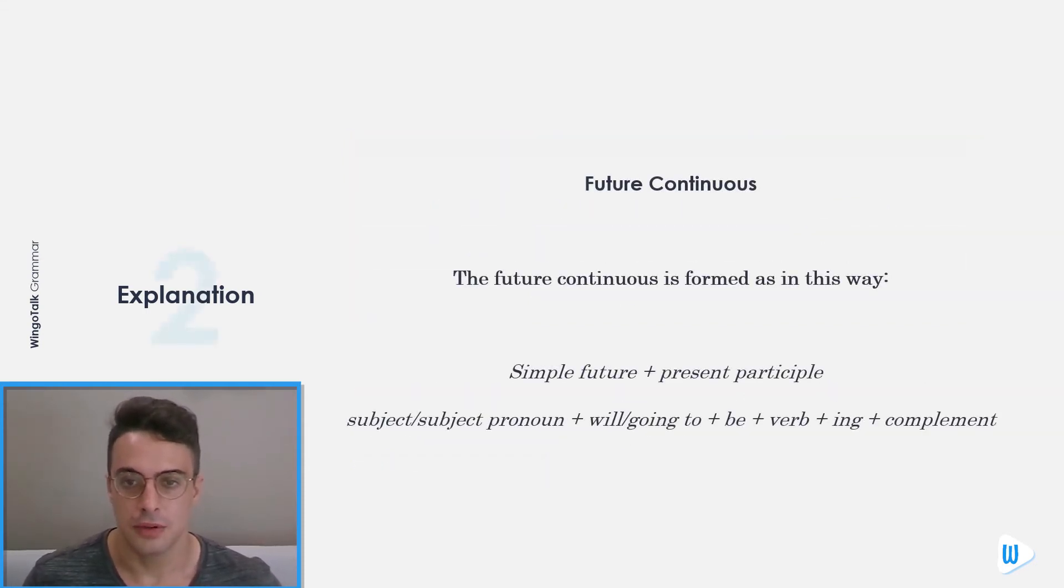Future Continuous: The future continuous is formed this way: Simple future plus present participle. Subject, subject pronoun plus will going to, plus be, plus verb plus ing, plus complement.